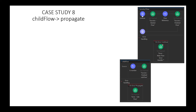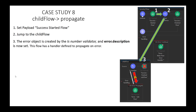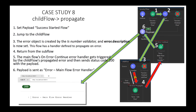Case Study 8: child flow has propagate, but parent flow has continue. What do you think will happen? Step 1, set the payload. Step 2, jump to the child flow. Step 3, the IsNumber validator fails. Step 4, OnErrorPropagate — so we return to the parent flow. Step 5, the parent flow has an OnErrorContinue — red in, green out — so we return the payload 'ERROR MAIN FLOW ERROR HANDLER' and the status code 200.